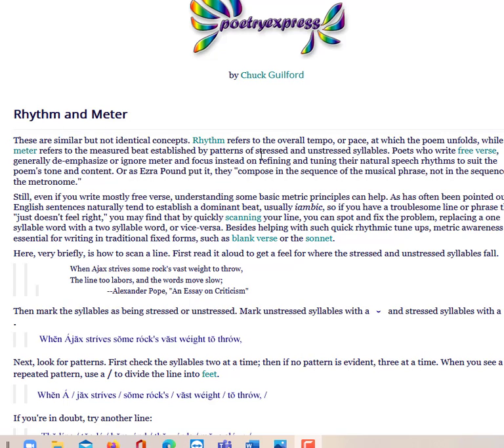Rhythm refers to the overall tempo or pace at which the poem unfolds, while meter refers to the measured beat established by patterns of stressed and unstressed syllables.